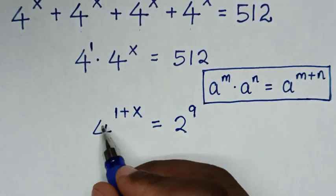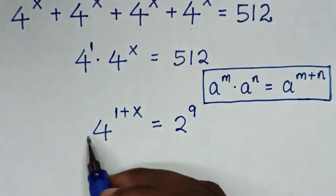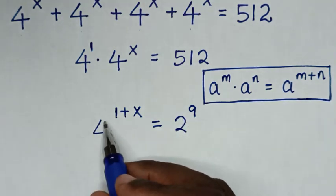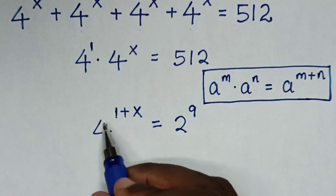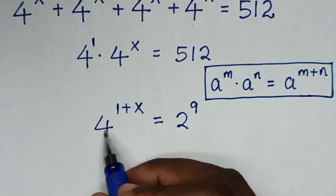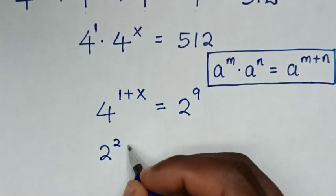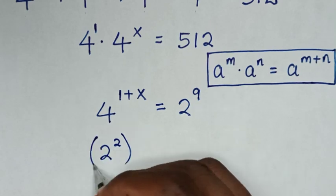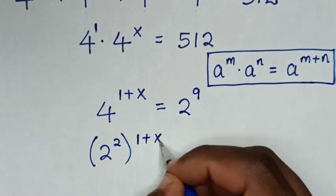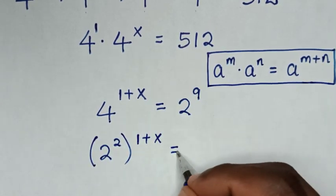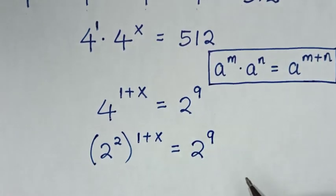Now 512 is the same as 2 power of 9. We have base 2 on the right side and base 4 on the left, so we make base 4 into base 2. Now 4 is the same as 2 power of 2, so it becomes 2 power of 2, bracket power of 1 plus x, is equal to 2 power of 9.